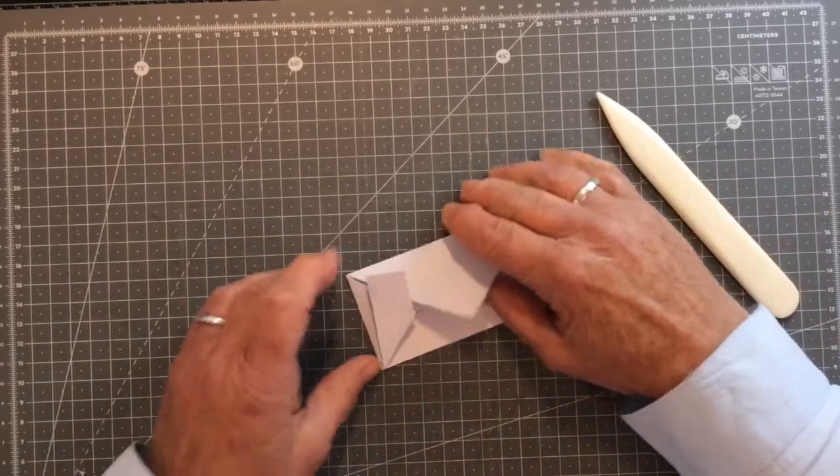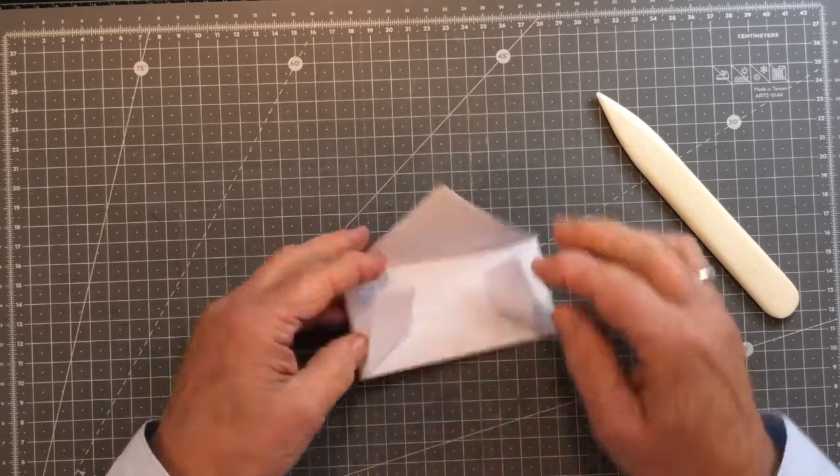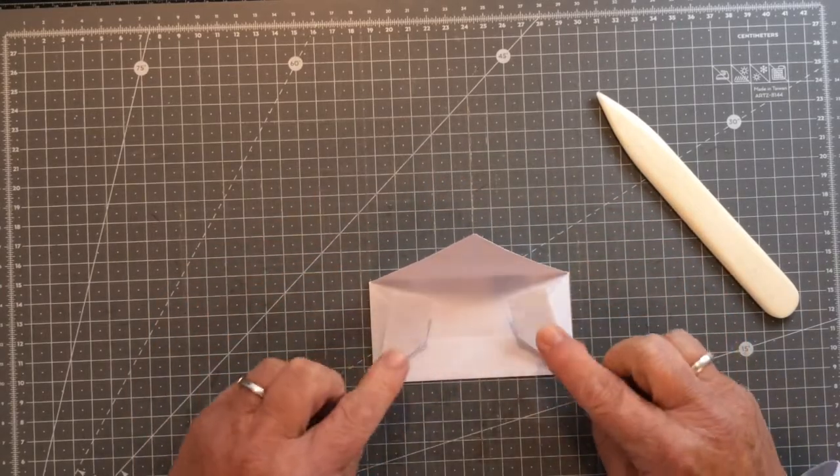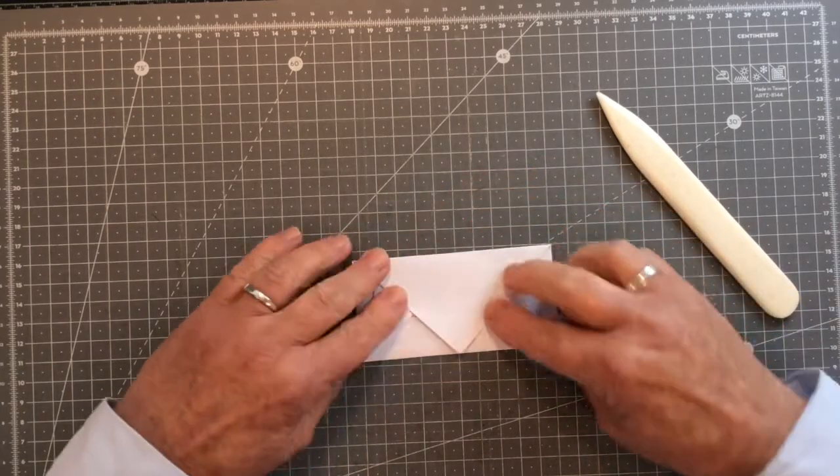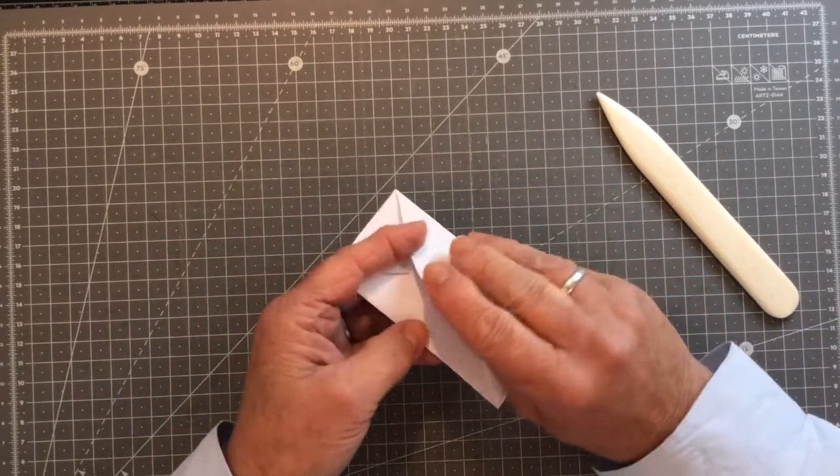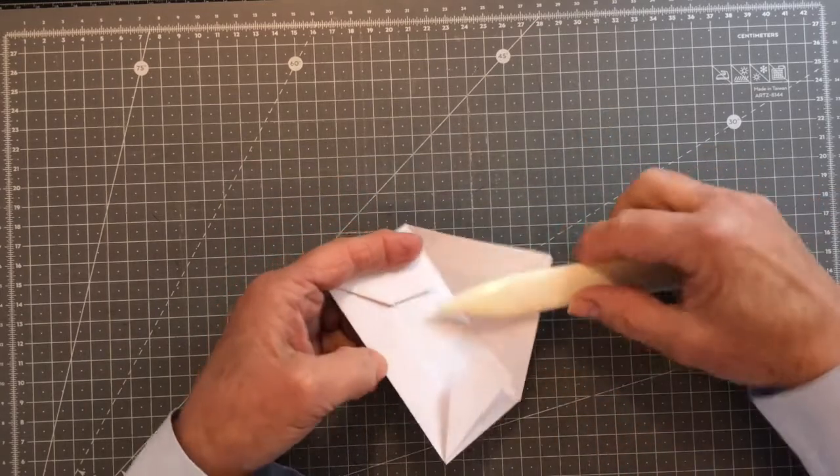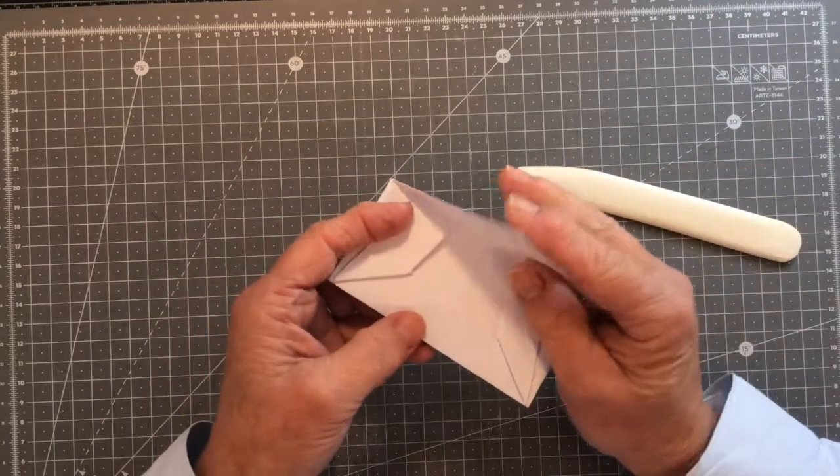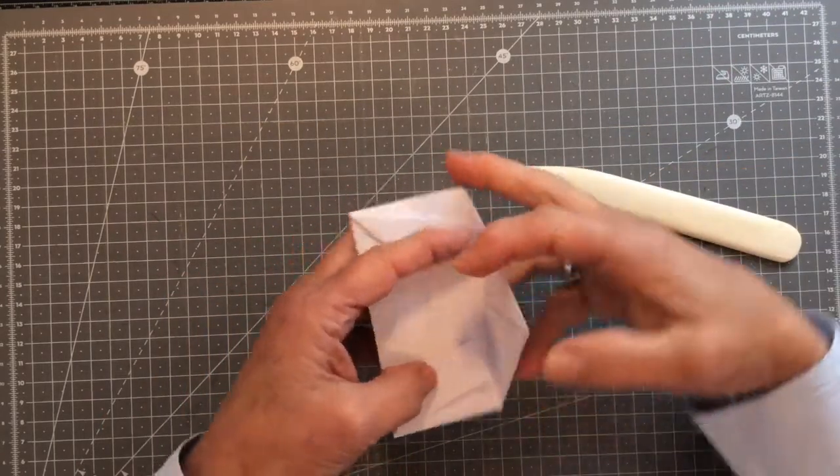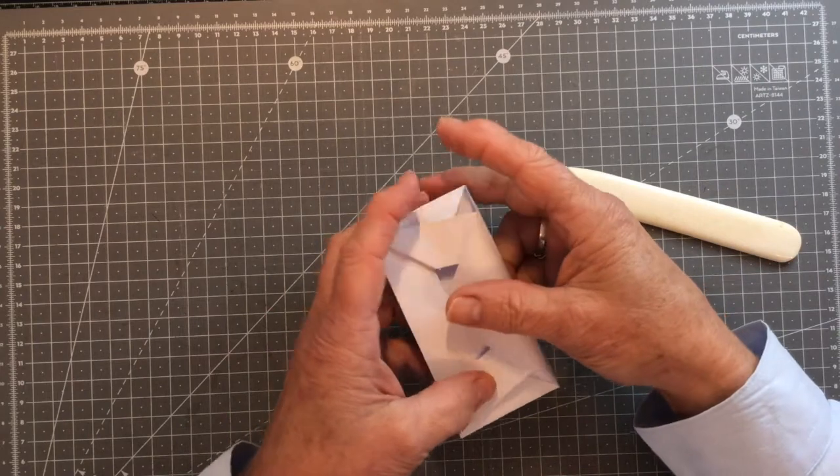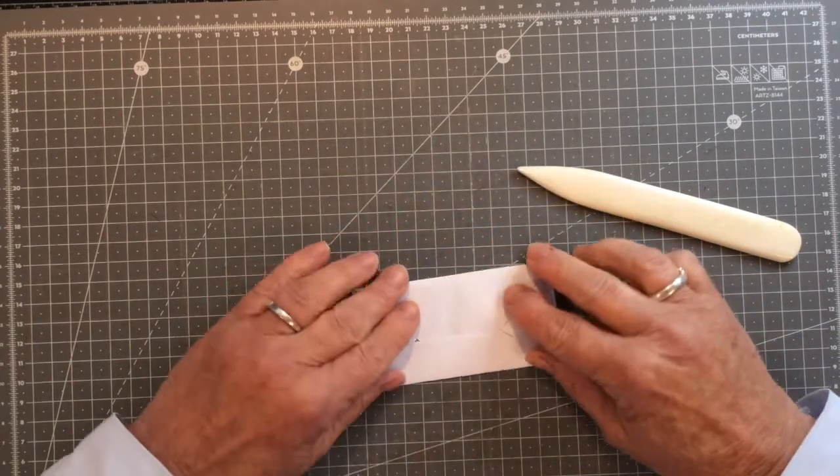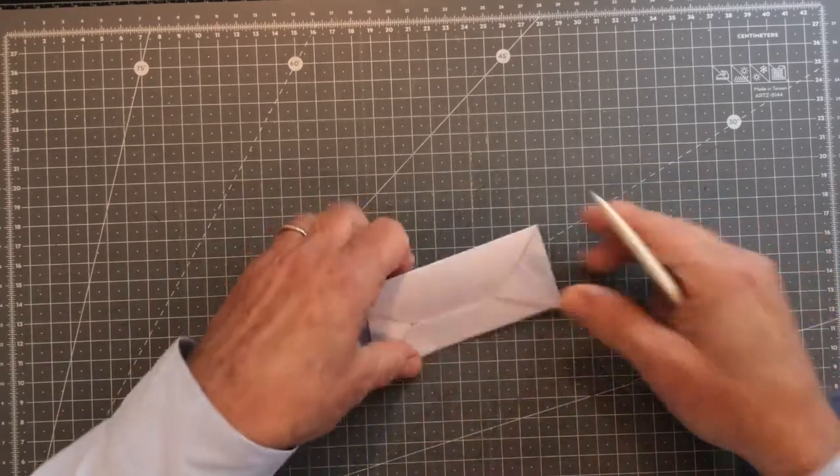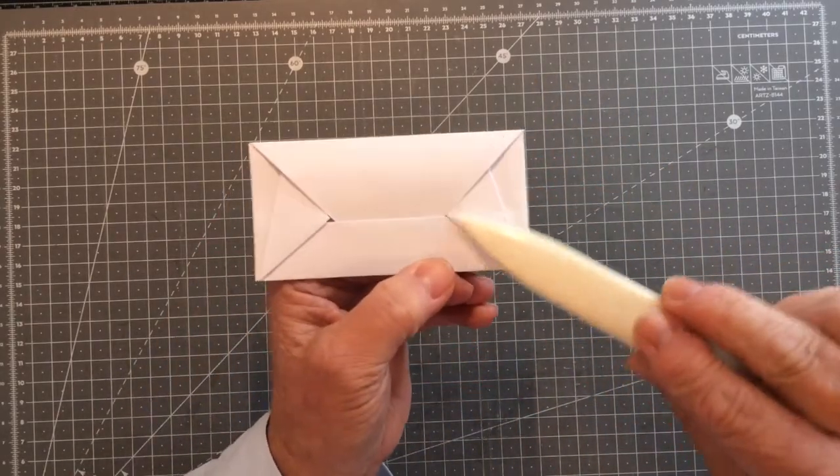like so and that's it everybody that is literally it these two pieces these pieces that you've just folded up they stay where they are but this flap comes down and over the top of them and then it tucks into this portion here it tucks into that bit so you just need to curl it a little bit and tuck it in like so